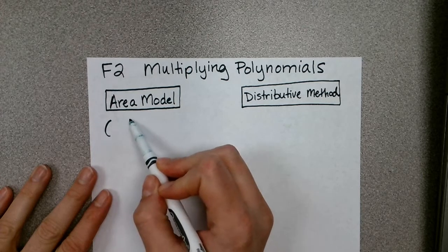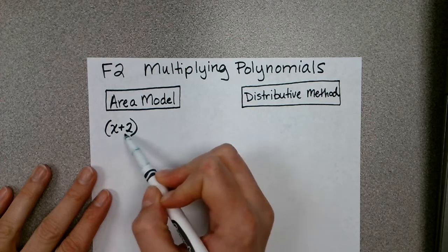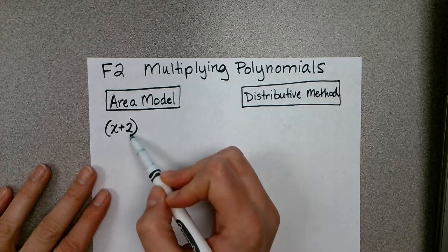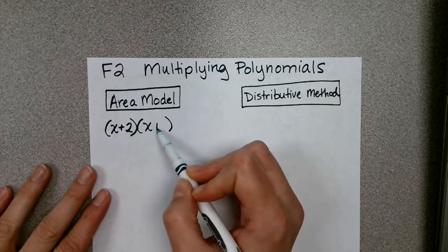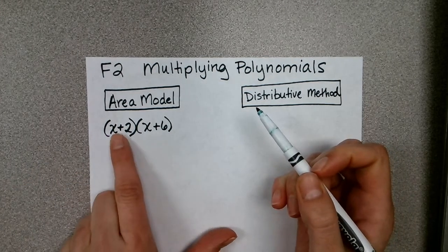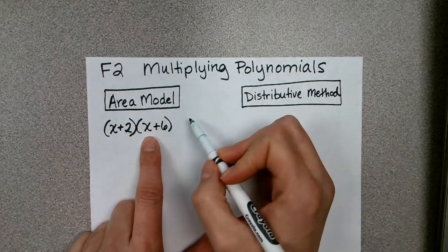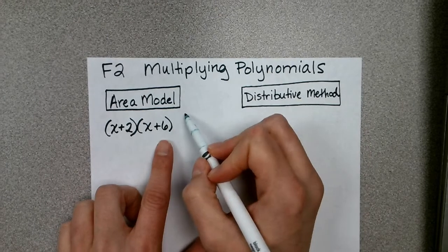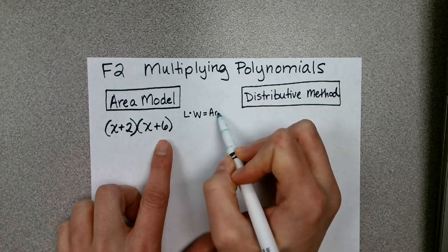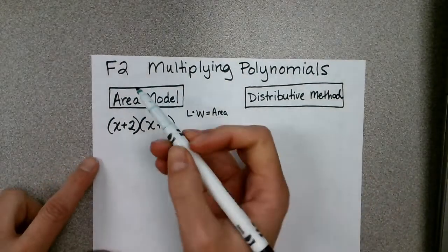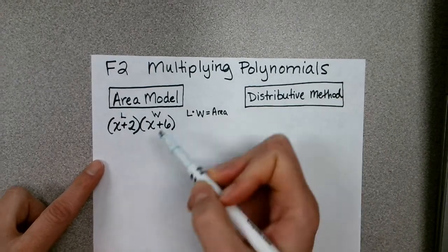The multiplication problem might look like a binomial x plus 2 — it's called a binomial because there are two terms — multiplied with another binomial, x plus 6. When we use an area model, we use the fact that in a rectangle or square, length times width gives us the area. We treat one binomial as the length and the other as the width.